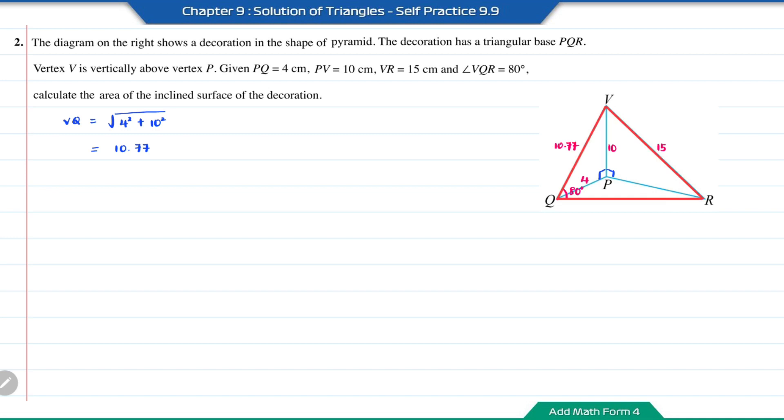Now let us focus on triangle VQR. If we can find angle QVR, then we will have two sides and one included angle. Then we can find the area of the inclined surface using the formula 1/2 AB sin C.